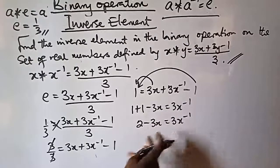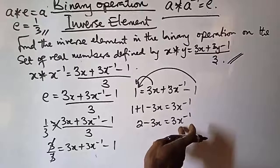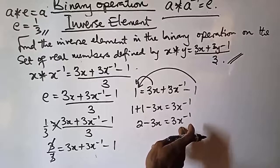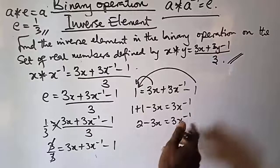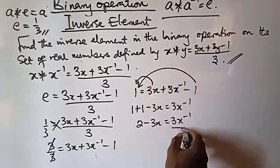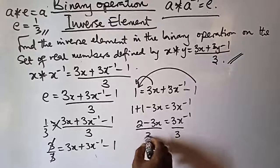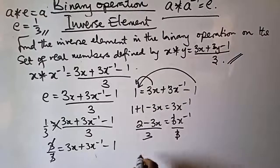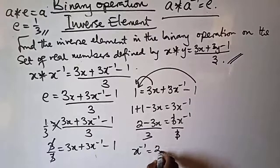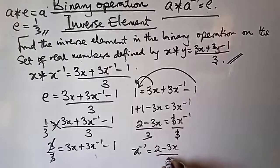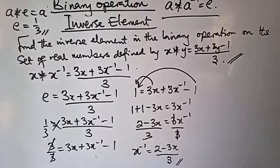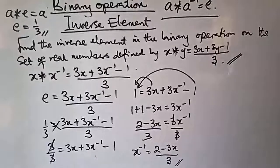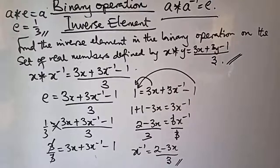We can now make the inverse of x the subject of formula. Dividing both sides by 3 — the 3 cancels — the inverse element is therefore 2 minus 3x, all over 3. This is our final answer. I believe you understand this. Thank you.